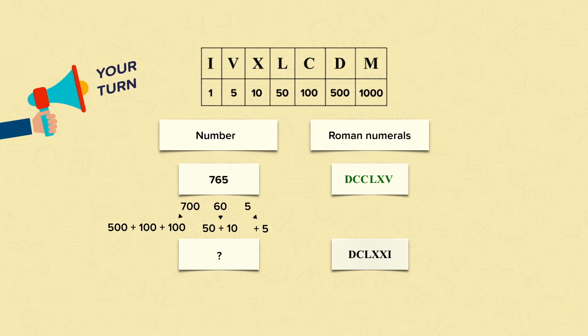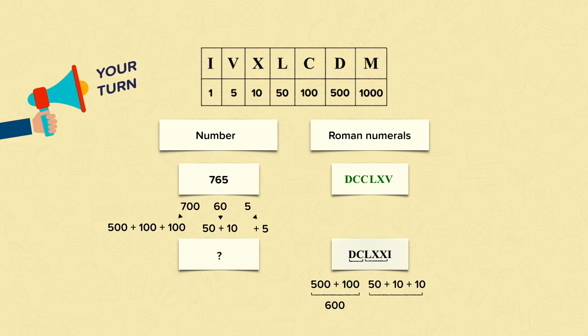Now let's see if you correctly wrote D, C, L, X, X, I as a number. Did you start by looking at the hundreds? D, C — D represents 500, C represents 100, so the total of the hundreds is 600. Then the tens: L, X, X represents 50 add two lots of 10, which is 70. And then you've got the I which is just 1. So if you added these values together you should have got 671. Well done if you did.